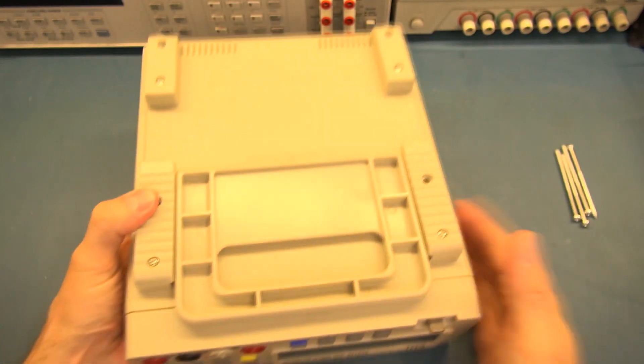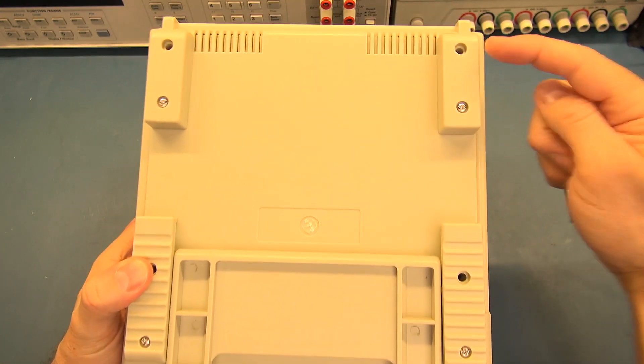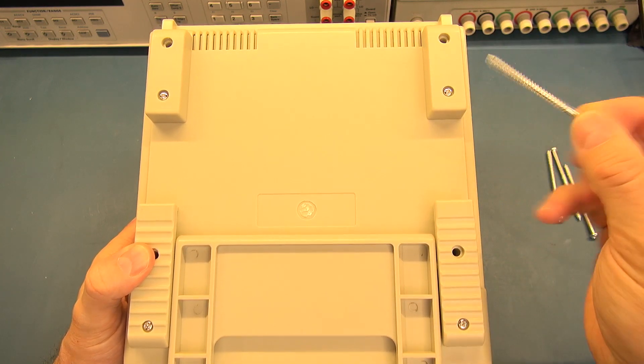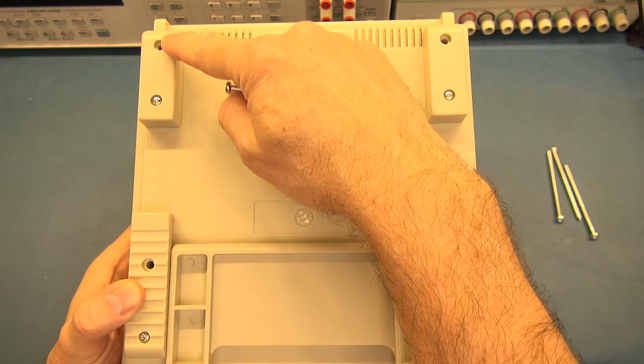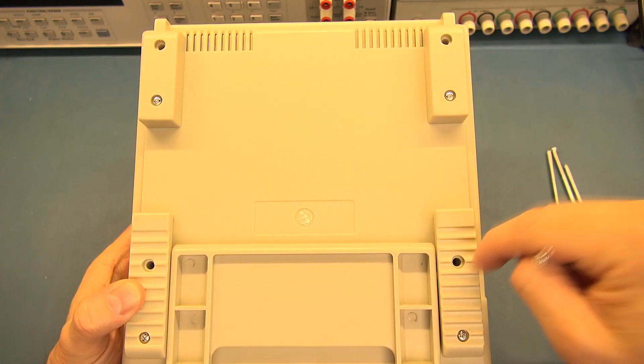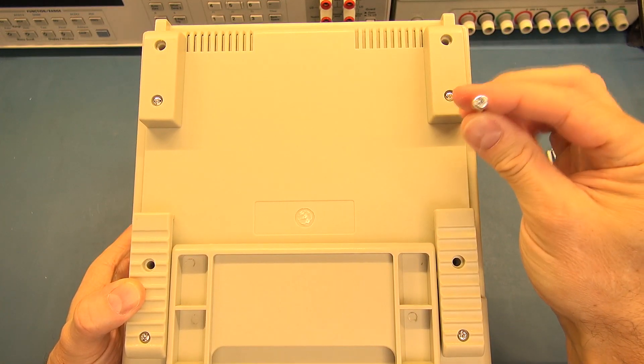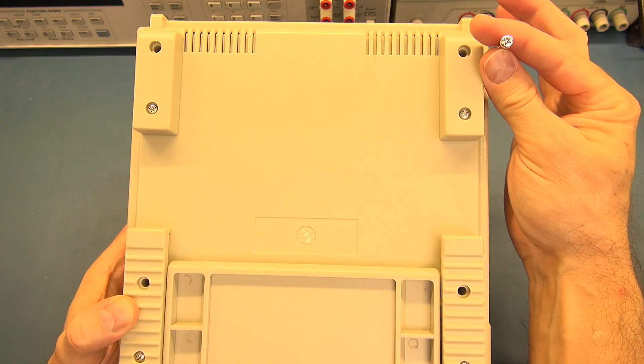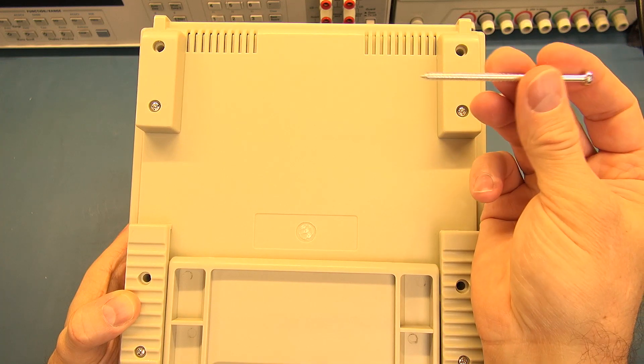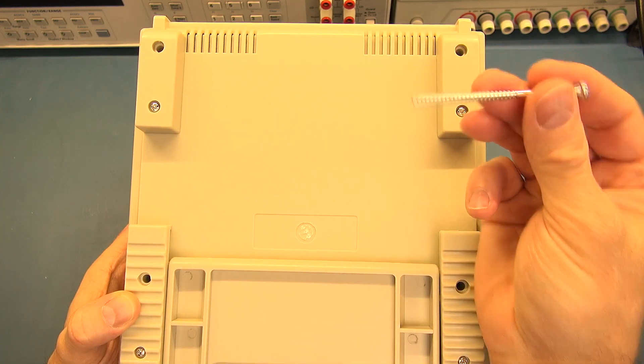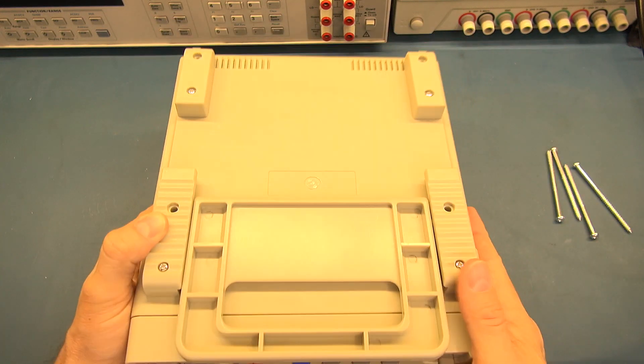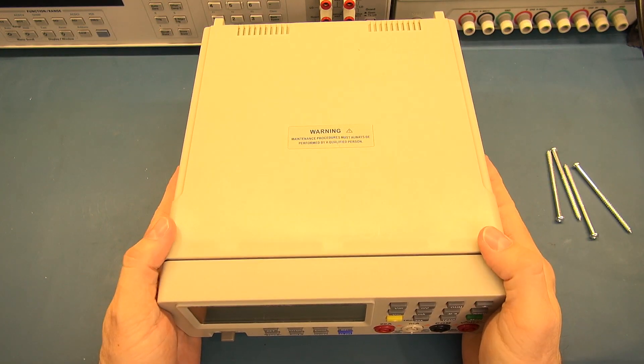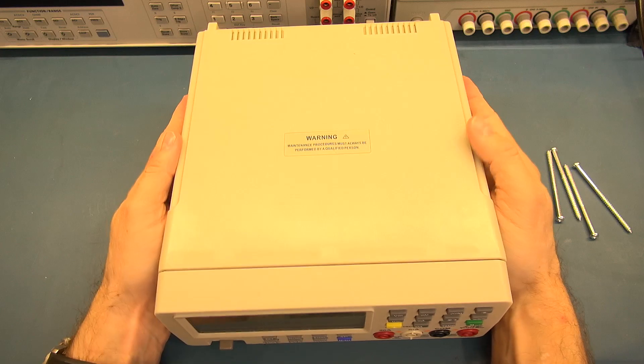So getting into this, in the bottom there are four long screws. I've already removed them. You can see they're fairly long. These other ones obviously hold on these feet. These heads are slightly bigger than these heads. So if you're looking at it, just look for the screws with a bigger head. They're obviously just going into plastic inside. I suppose we can't expect any more from something in this price range.